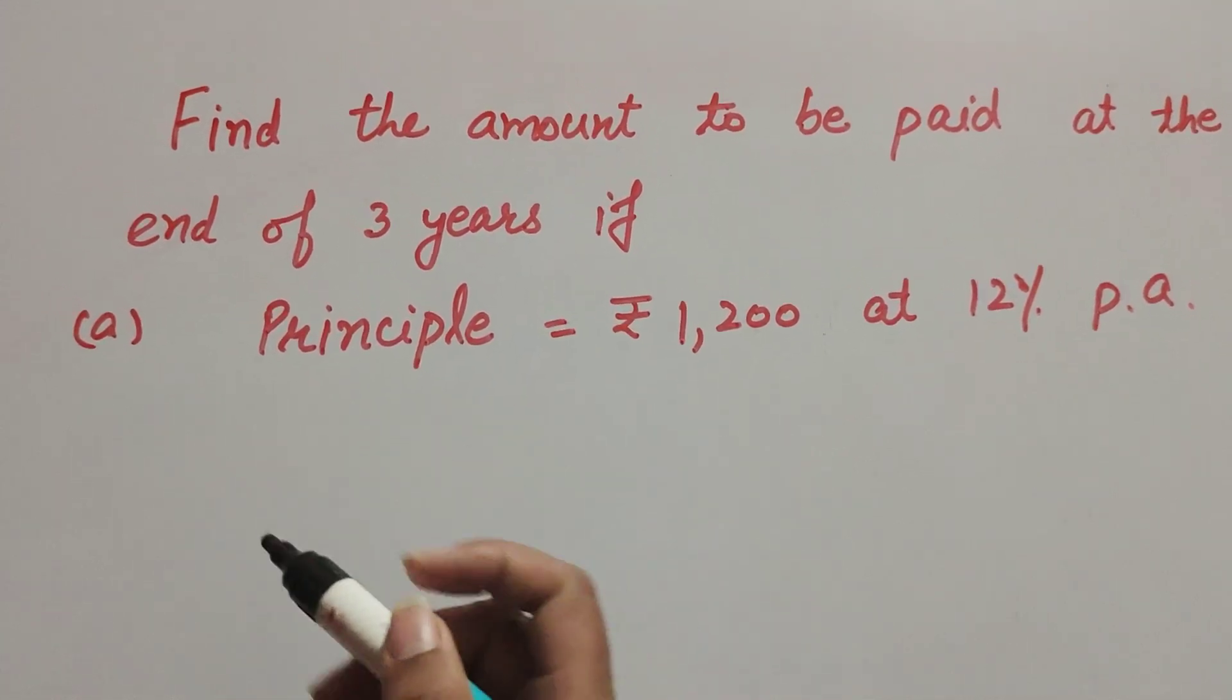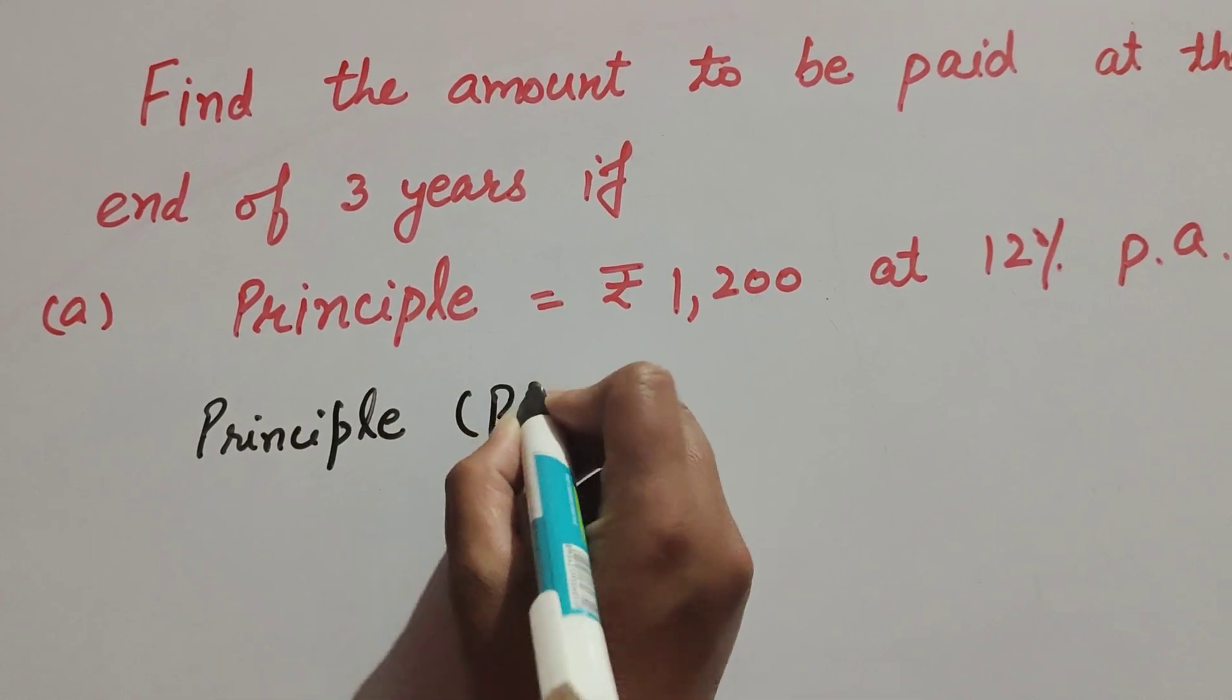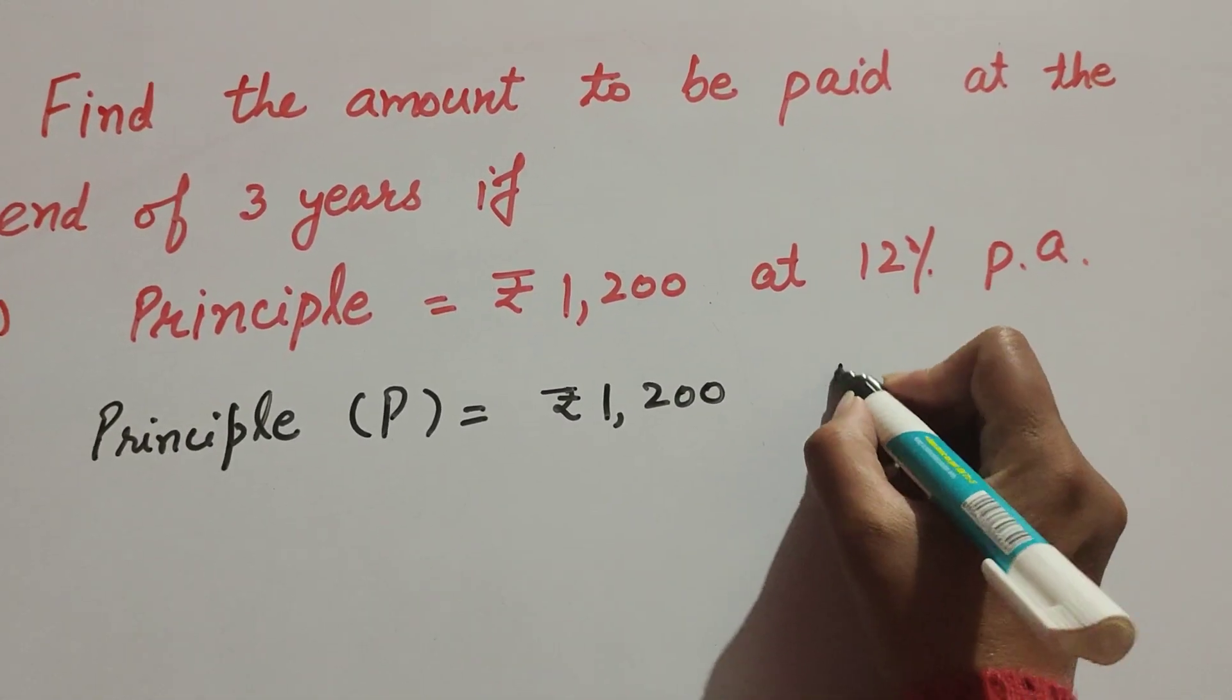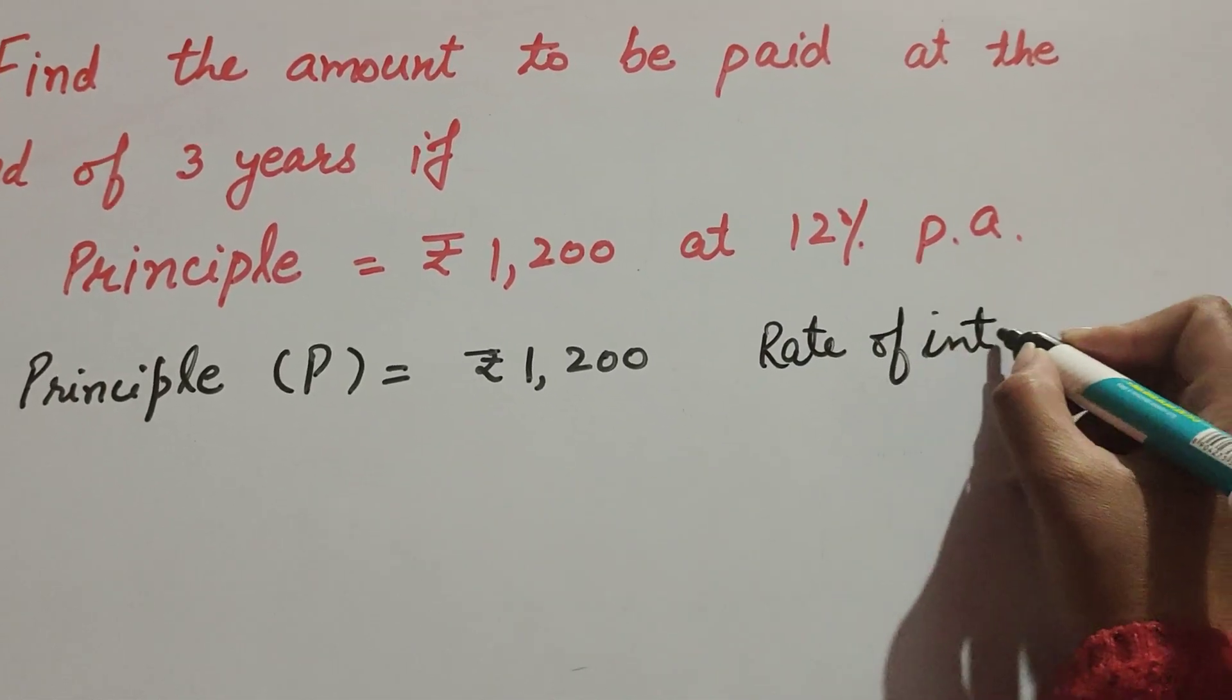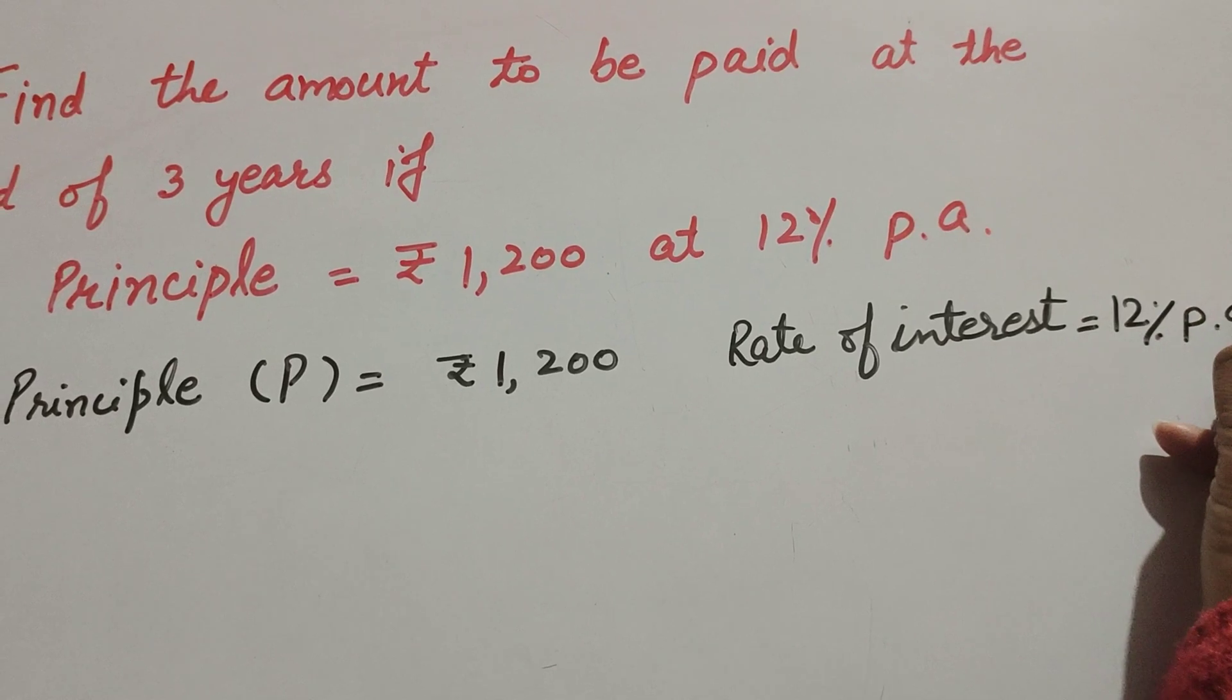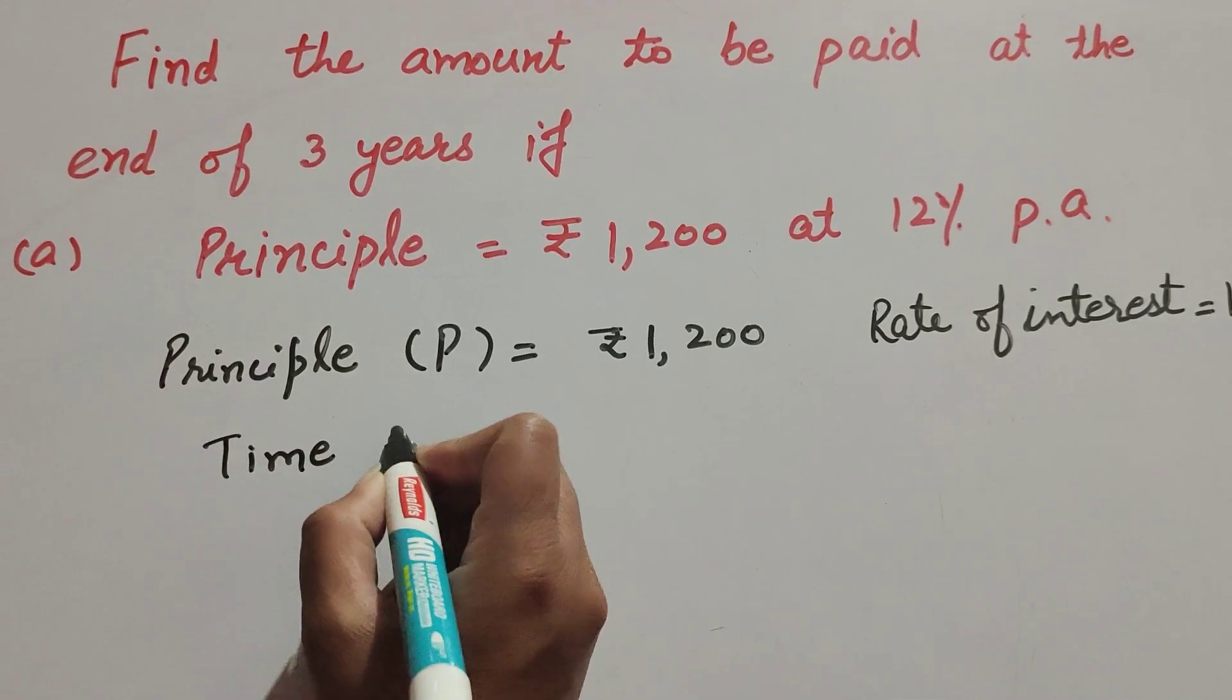So in this question, principal is given. We find amount that is paid after three years. Given is principal, it is equal to rupees 1,200. Rate of interest also given, it is equal to 12 percent per annum. Time also given, time is three years.